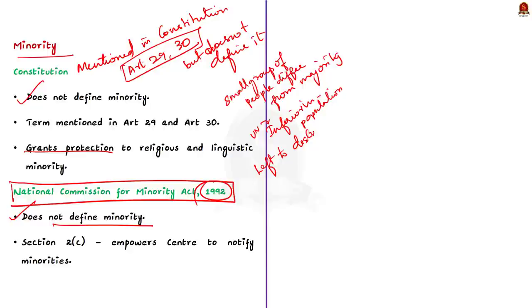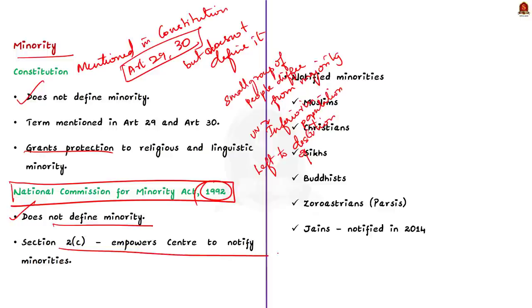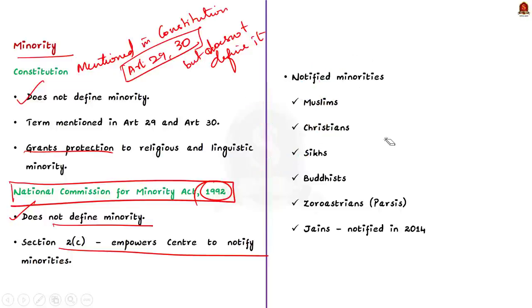Therefore, it was left at the discretion of the Central Government to determine what constitutes minorities. And based on this, six religious communities were already notified as minorities. And this was done under Section 2, Clause C of the 1992 Act, which says that the Central Government will notify who are minorities. According to it, initially, five religious communities were notified as minority communities. This includes Muslims, Christians, Sikhs, Buddhists and Zoroastrians, that is Parsis. And then later, in the year 2014, Jains were also added to this list of minorities.